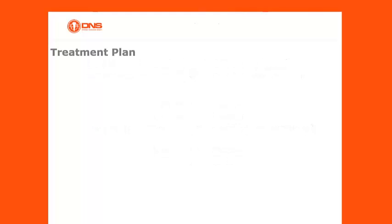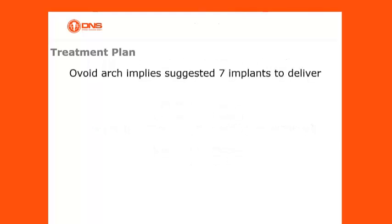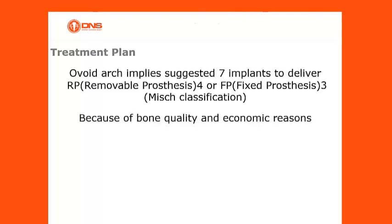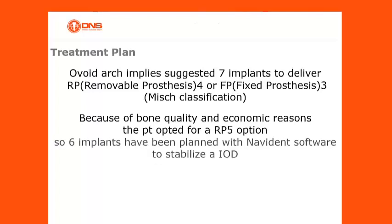For the treatment plan, the avoid-arch approach suggested 7 implants to deliver an RP-4 or FP-3 MISH classification. However, because of bone quality and economic reasons, the patient opted for an RP-5 option. As a result, 6 implants were planned using Navident software to stabilize an implant overdenture (IOD).